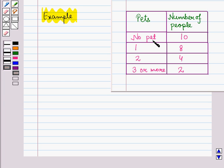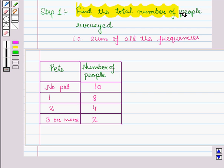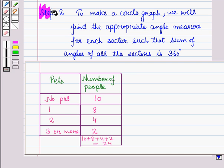We will represent this data in a circle graph. In step 1, we will find the total number of people surveyed, which will be equal to the sum of all the frequencies — that is 10 plus 8 plus 4 plus 2, which is equal to 24.